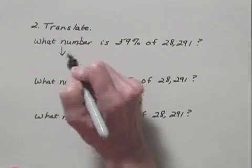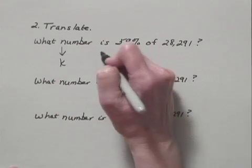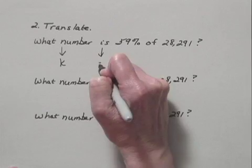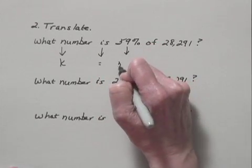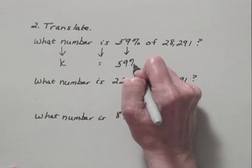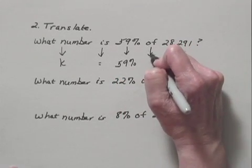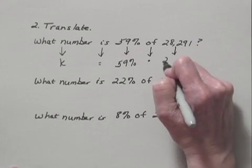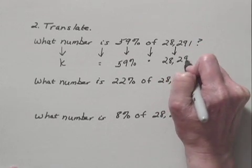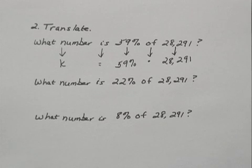We let K represent the kidney transplants, the number of kidney transplants. Is translates to equals. For now we'll just write 59%. Of translates to multiplication. And then we have 28,291. So we have an equation that will help us find the number of kidney transplants.